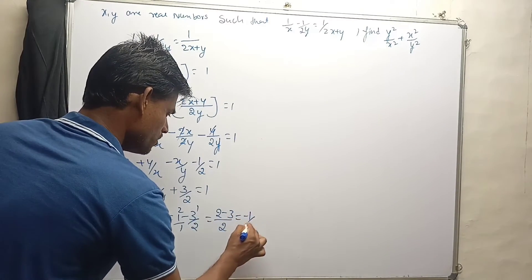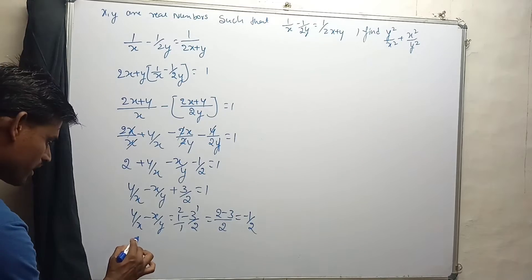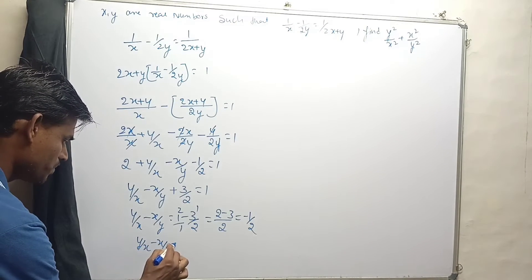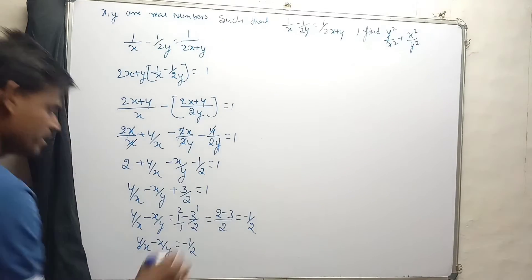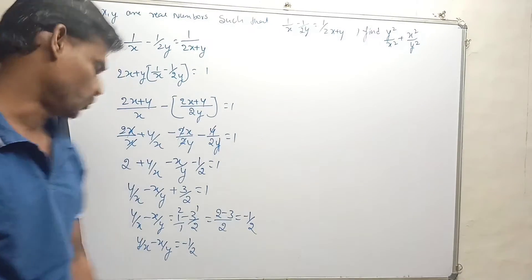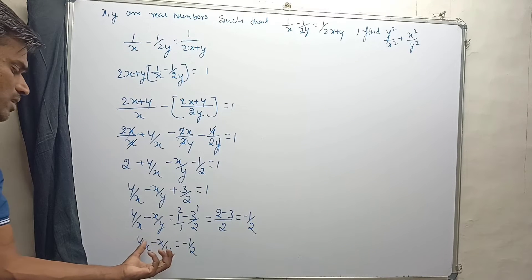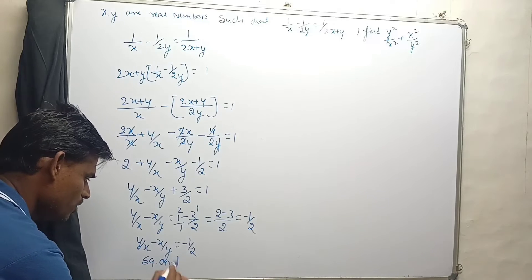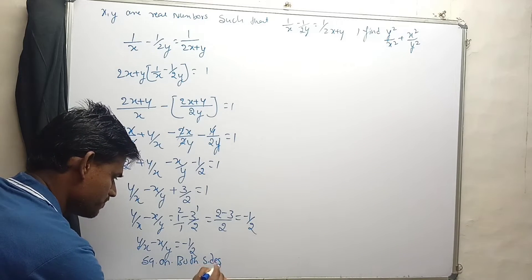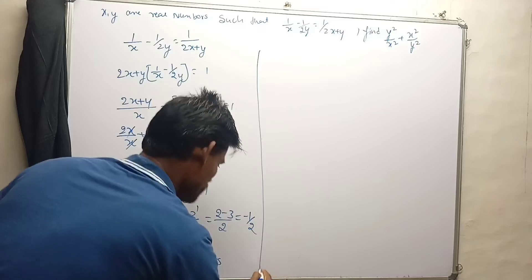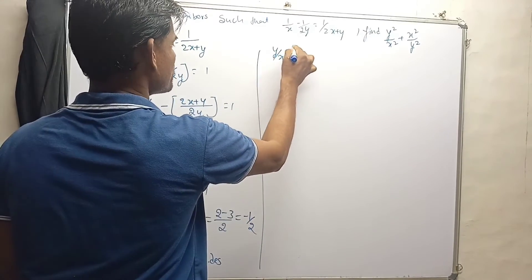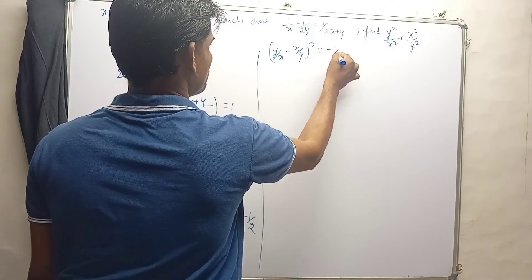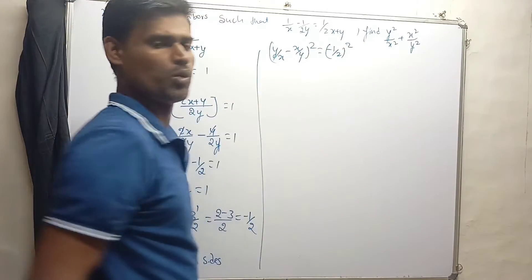So at last we have y/x minus x/y equals minus 1/2. To find out the solution, let's square both sides. By squaring both sides, we have (y/x minus x/y)² equals (minus 1/2)².